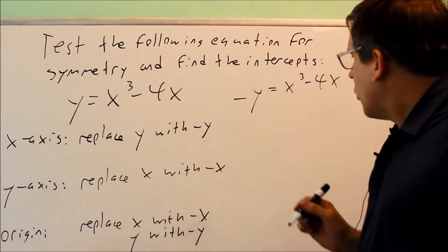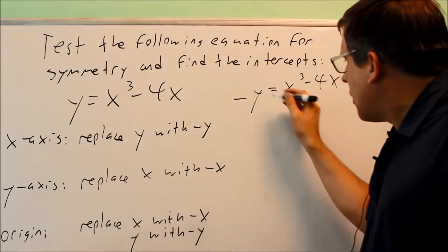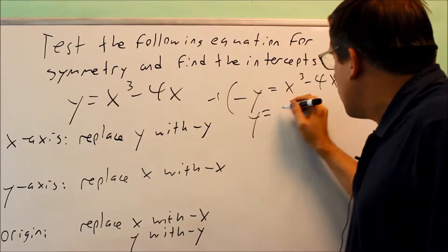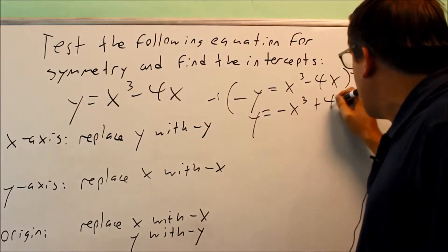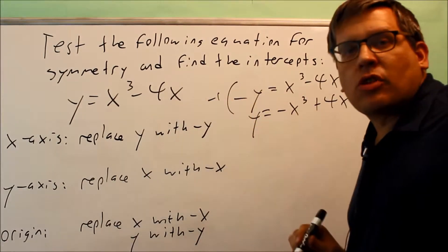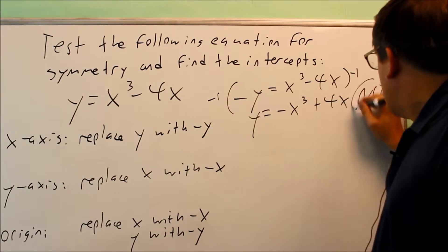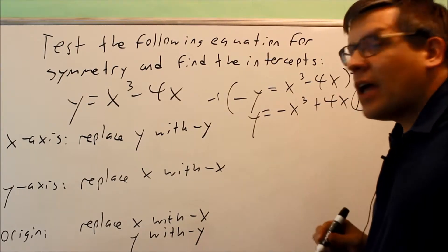If I were to get rid of the negative by multiplying both sides by negative 1, I would get y equals negative x cubed plus 4x. That's not the same as the original one, so this is definitely going to be a no. This does not have any x-axis symmetry.